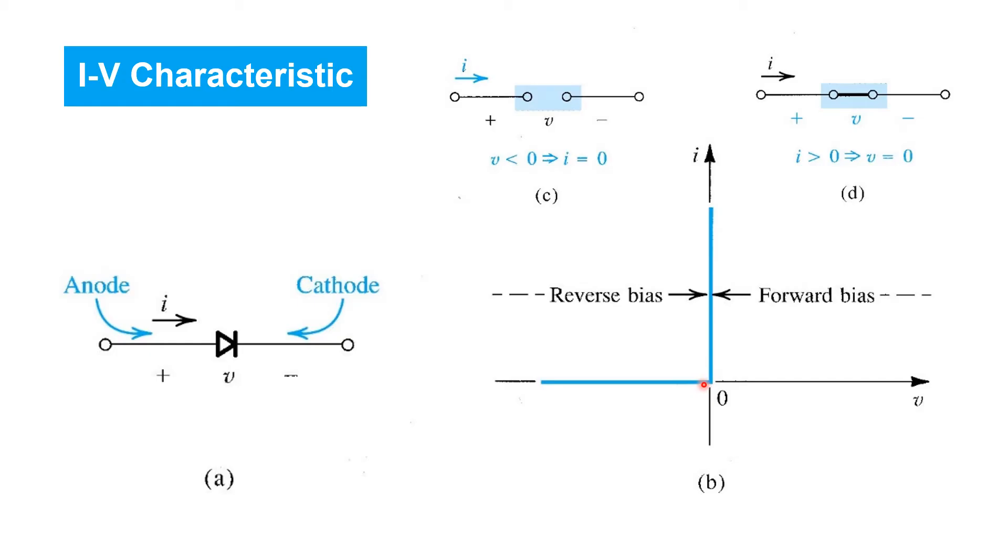We can think of the device as being linear in each of its two separate regions. We call this region here on the left, reverse biasing. That is, when a negative voltage V is applied, then the circuit behaves like an open circuit with no current flowing.